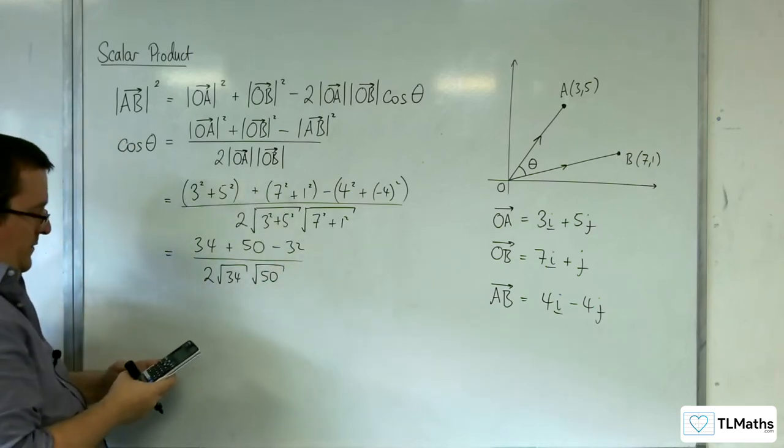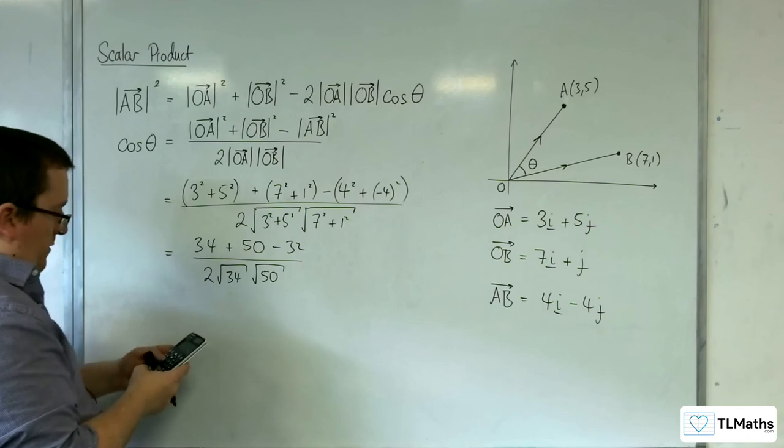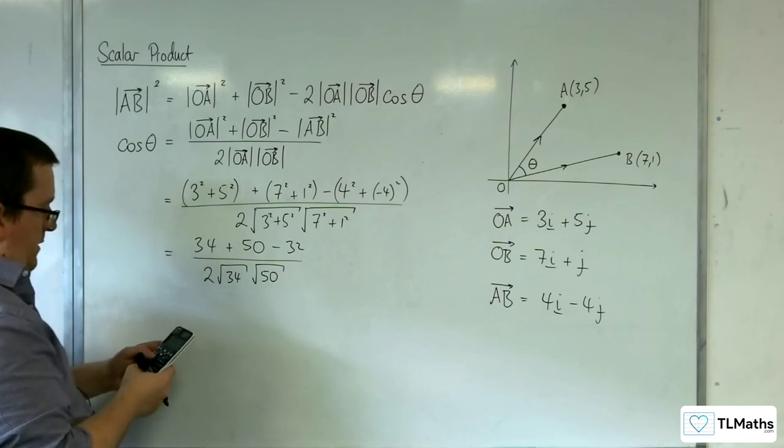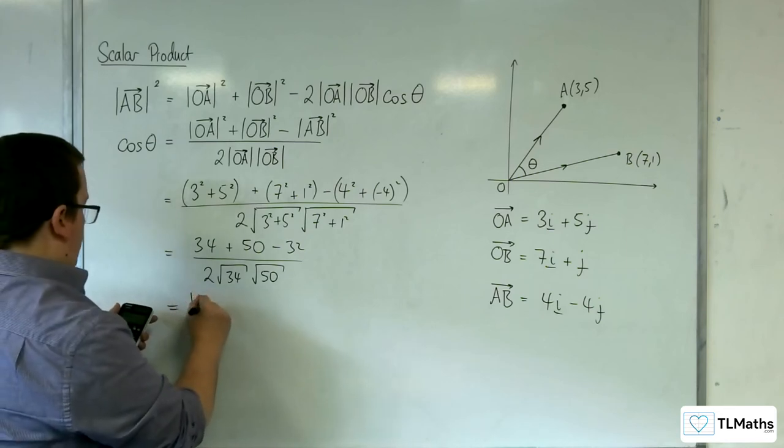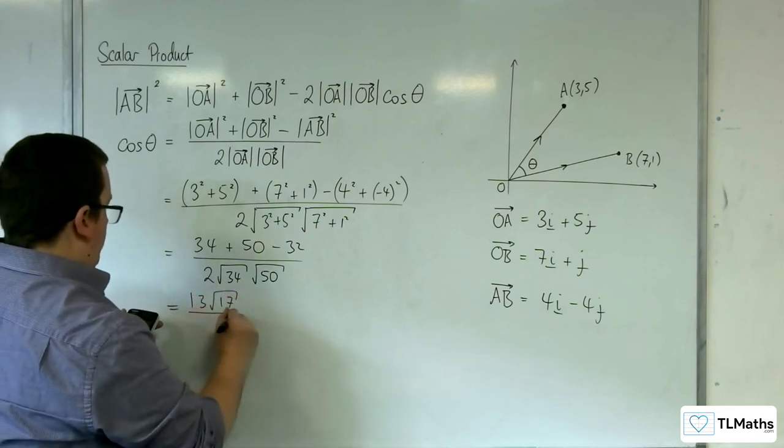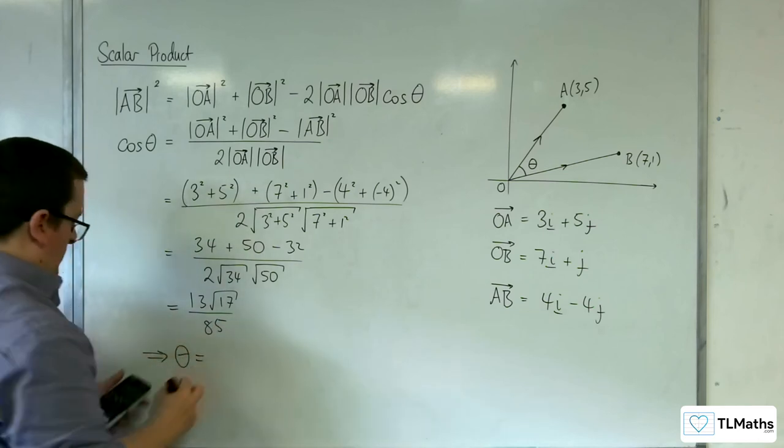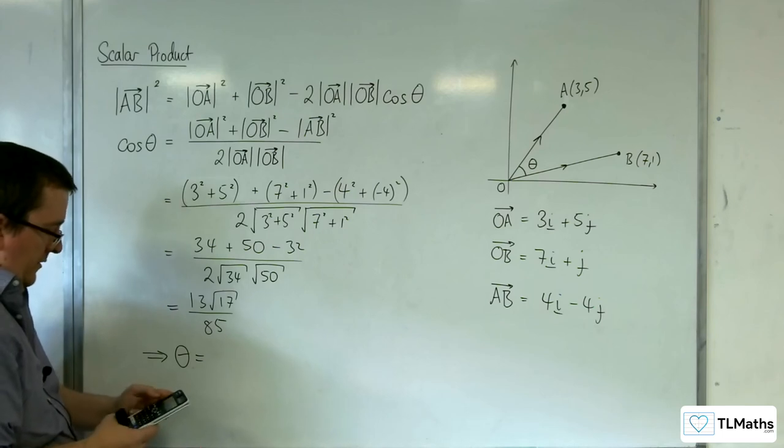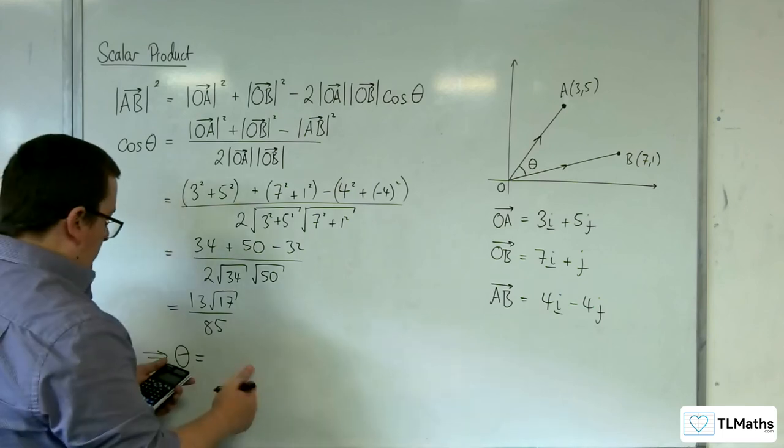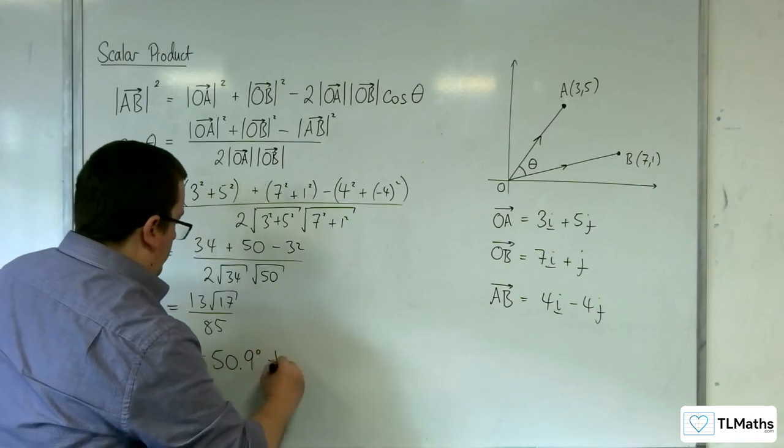So 34 plus 50 take away 32 over 2 times root 34 times root 50, that gets us 13 root 17 over 85. So if I put this into degrees, inverse cosine of that is 50.9 degrees to 3 significant figures.